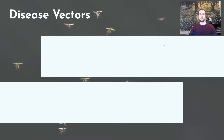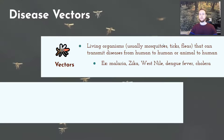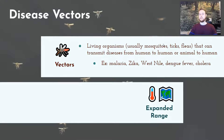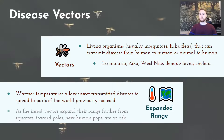Next, we'll discuss disease vectors — organisms, often insects like fleas, ticks, and mosquitoes, that transmit diseases. Examples include malaria, Zika virus, West Nile virus, dengue fever, and cholera. As greenhouse gases increase and the planet warms, the range of these vectors expands. Colder regions become warm enough for these insects to survive, putting new human populations at risk to diseases they were never exposed to before because their regions were previously too cold.